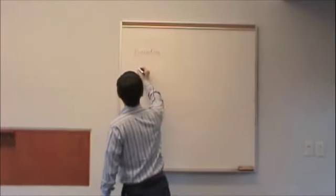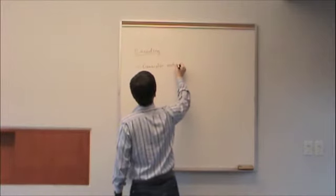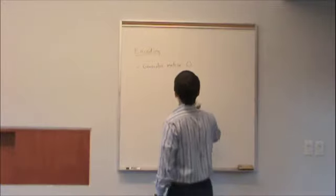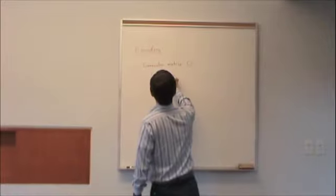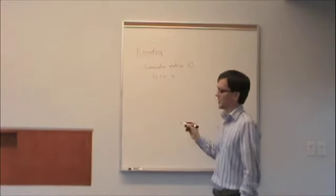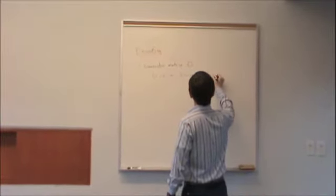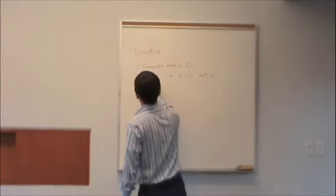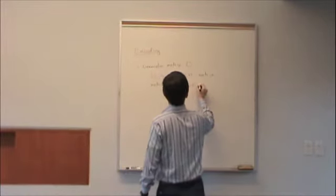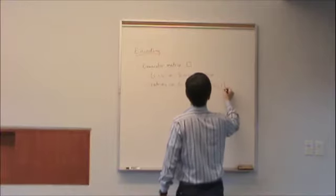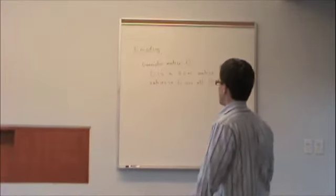We have generator matrix G. G is a K rows by N columns matrix. And the entries in G are all 0 or 1. And that's a requirement because we're going to use mod 2 arithmetic over this matrix.